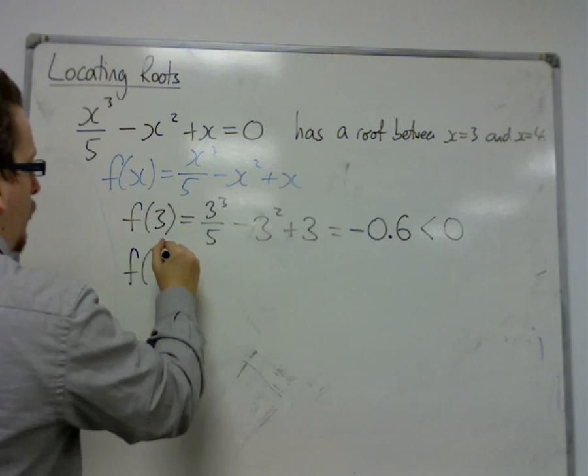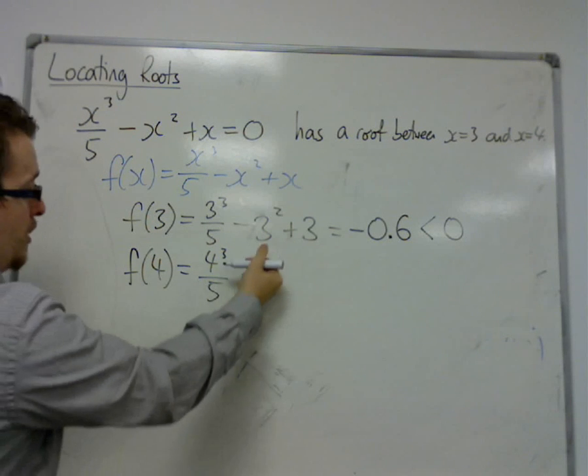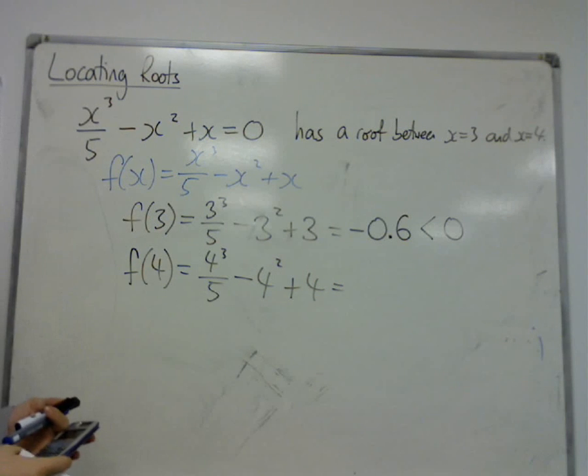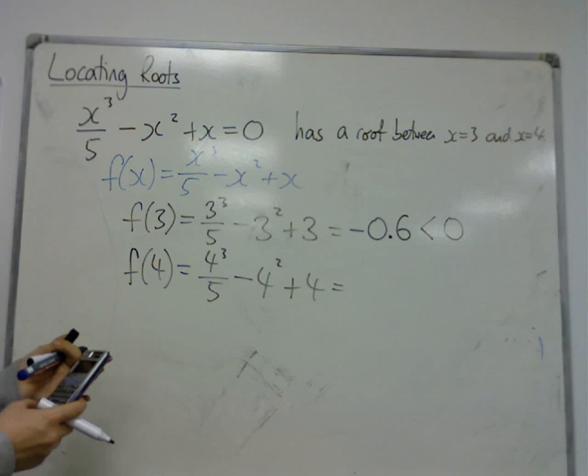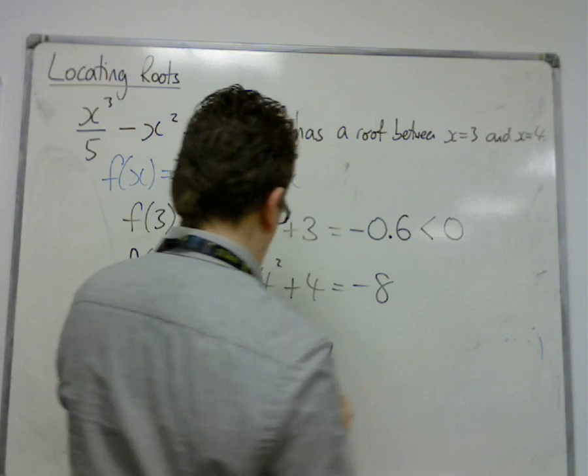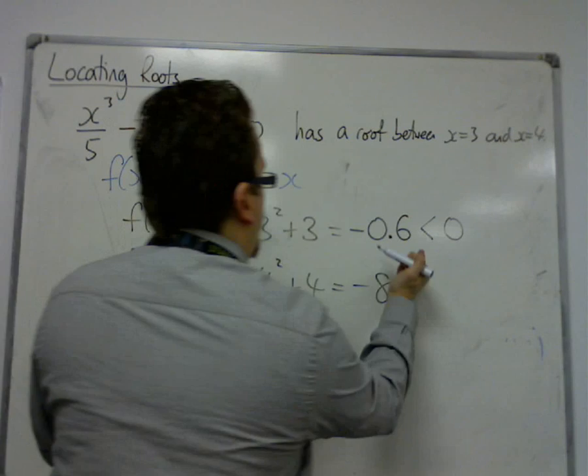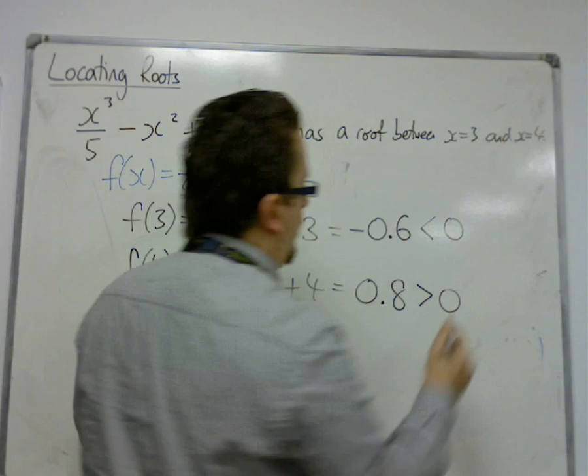And f of 4, so substituting in 4, 4 cubed over 5 take away 4 squared plus 4. So that is minus 8.8. Oh sorry, I must have gone wrong somewhere. 1 divided by 5. Well, apologies, that's 4 fifths, so that's 0.8. And that's greater than 0.